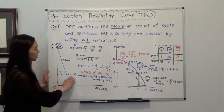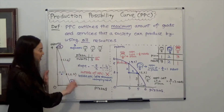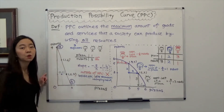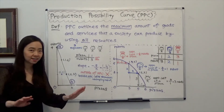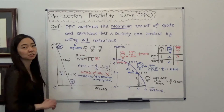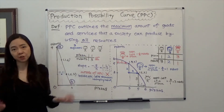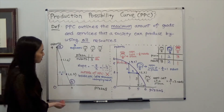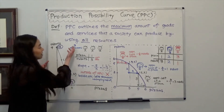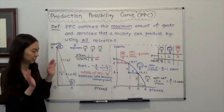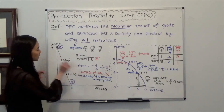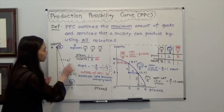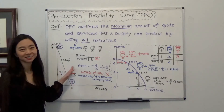Any point outside of the PPC is out of the question. Right now, given our resource of 3 engineers, it is impossible for us to produce any point outside of the PPC. For example, if you want 3 pizzas and 9 robots, that's out of the question. So the Production Possibility Curve also tells us the idea of scarcity — any point outside of the PPC is impossible.